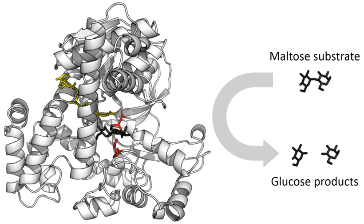A few decades later, when studying the fermentation of sugar to alcohol by yeast, Louis Pasteur concluded that this fermentation was caused by a vital force contained within the yeast cells called «ferments», which were thought to function only within living organisms. He wrote that «alcoholic fermentation is an act correlated with the life and organization of the yeast cells, not with the death or putrefaction of the cells». In 1877, German physiologist Wilhelm Kühne first used the term enzyme, which comes from Greek enzymon, «leavened» or «in yeast», to describe this process.